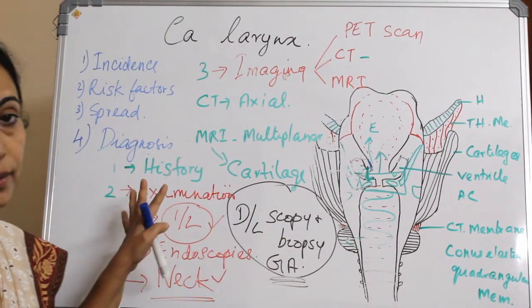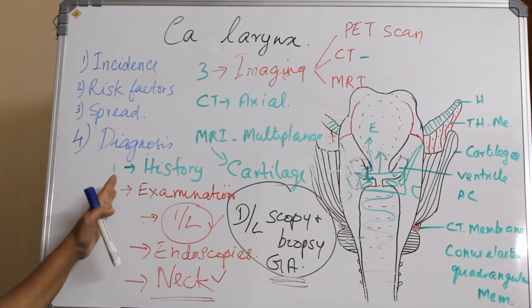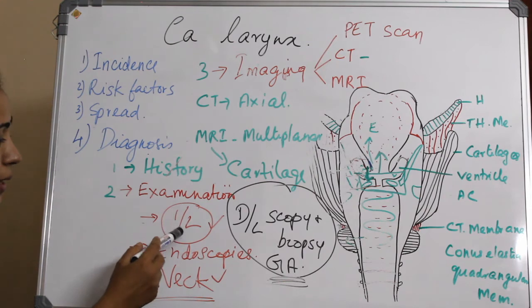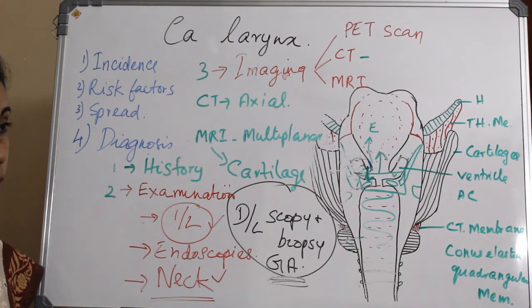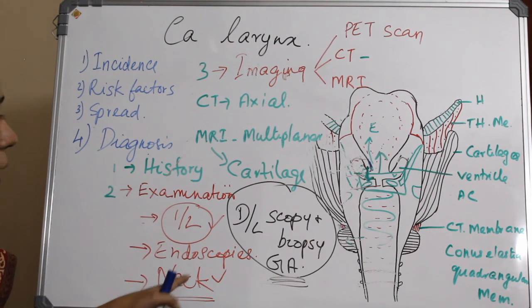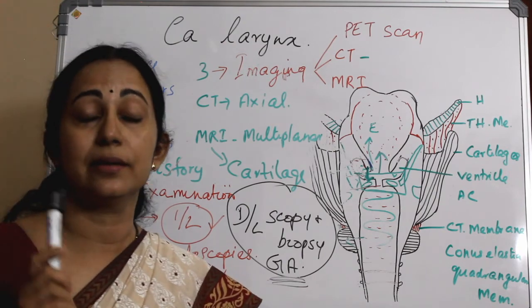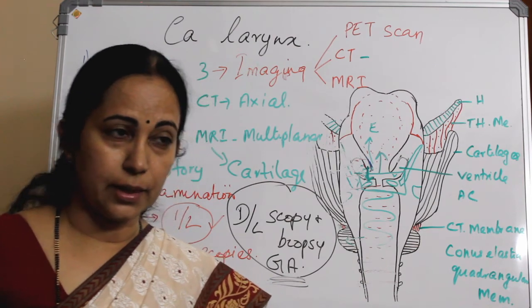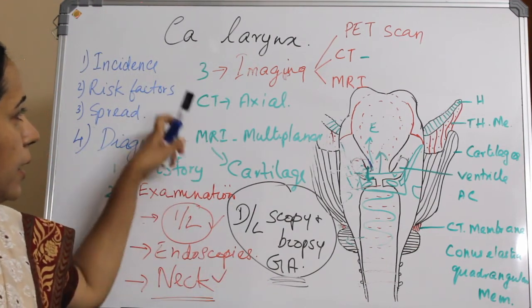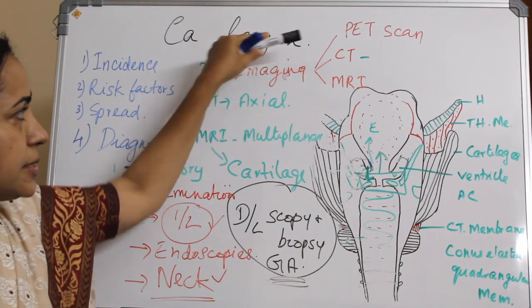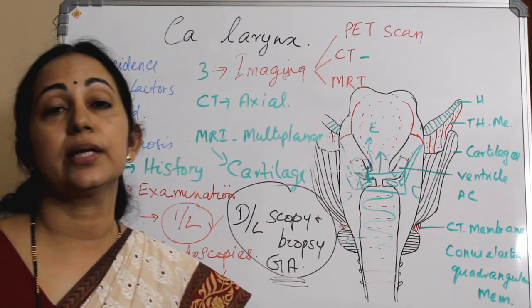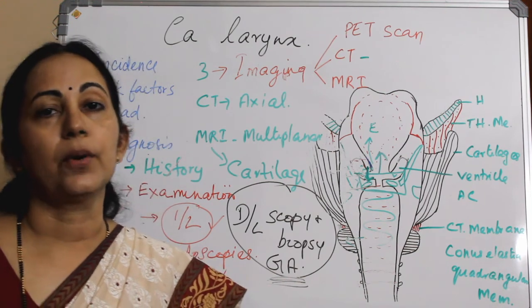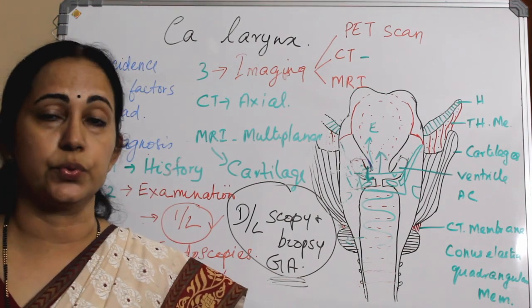In summary, the diagnostic modalities for CA larynx are: history and physical examination (especially indirect laryngoscopy, Hopkins rod endoscopes, and neck examination), direct laryngoscopy and biopsy under general anesthesia, stroboscopy and voice assessment, and imaging — primarily CT scan, MRI, and PET scan in cases of recurrence or residual lesions.